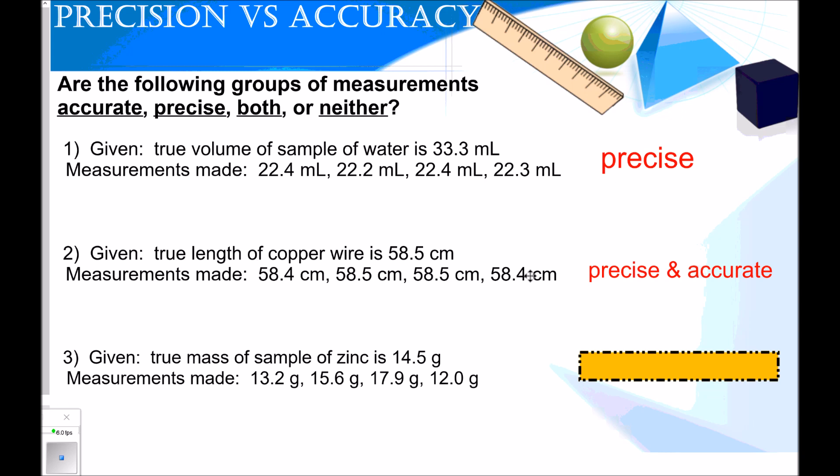Here's our last scenario. The true mass of a sample of zinc is 14.5 grams. The measurements that are made are 13.2, 15.6, 17.9, and 12 grams. Do you think this is accurate, precise, both, or neither? The correct answer is neither. So these measurements are completely random. They're not close to each other, and they're not really close to the true value. So we would just say that these are absolutely terrible. They're neither precise or accurate. So you would need to redo this because your measurements are not showing any value.